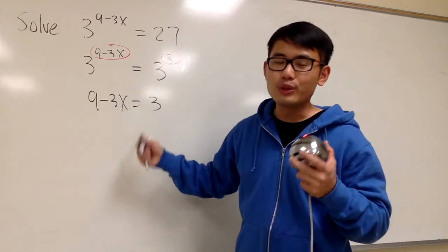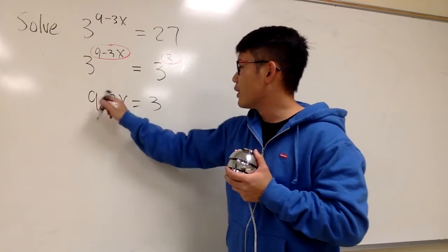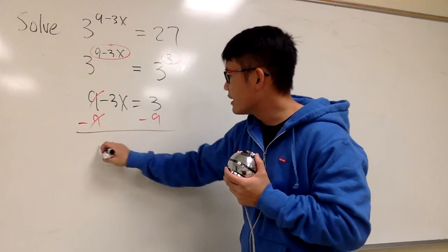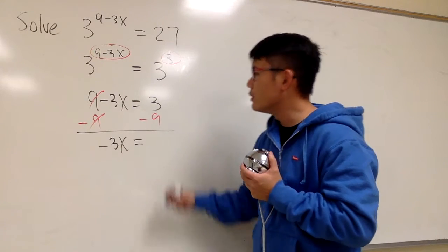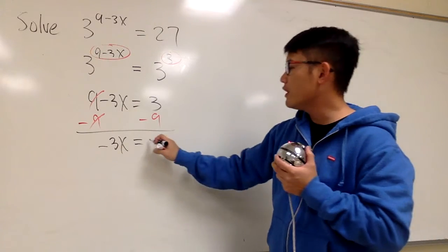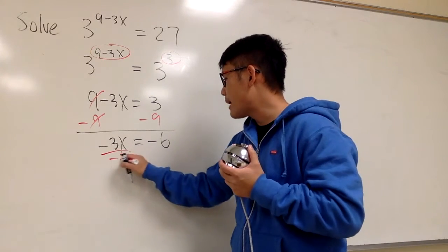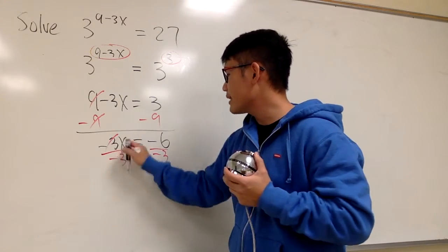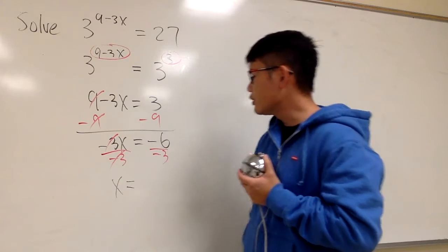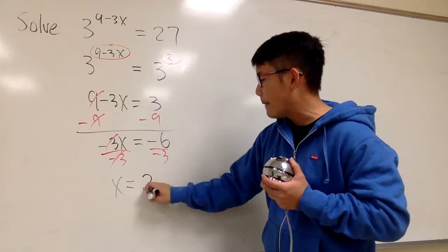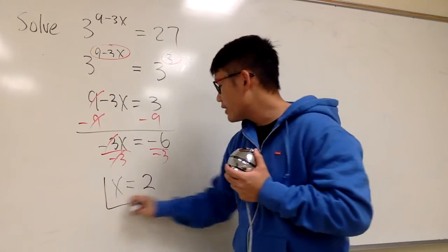And this is just a regular equation that we can work out. So that's minus 9 on both sides, and we will get negative 3x equals to 3 minus 9. That will give us negative 6. And then divide both sides by negative 3 so that the x will be by itself, and this is going to give us negative 6 over negative 3. That's going to be positive 2. This right here is it.